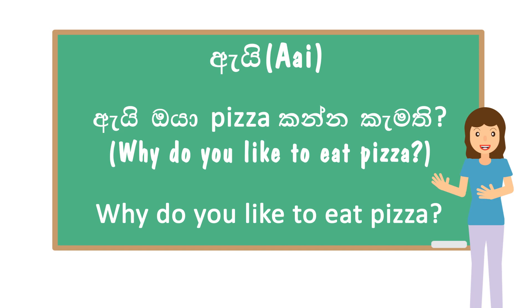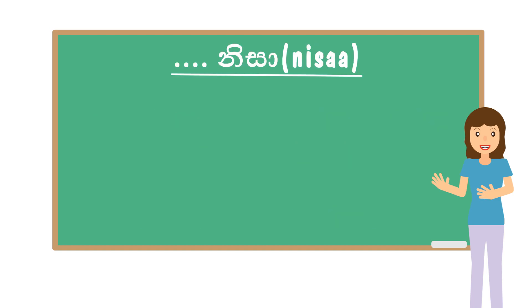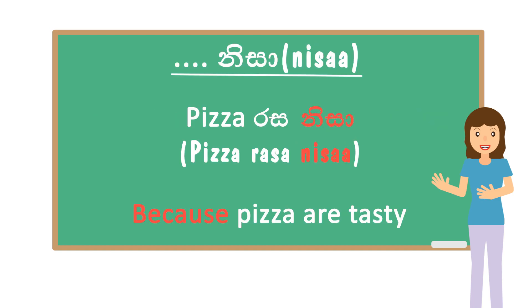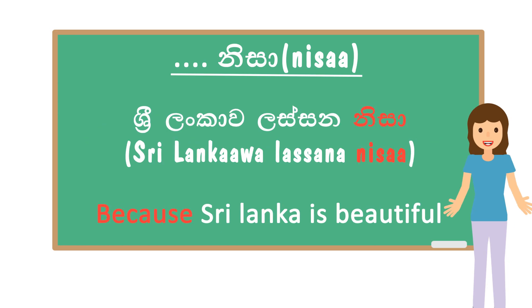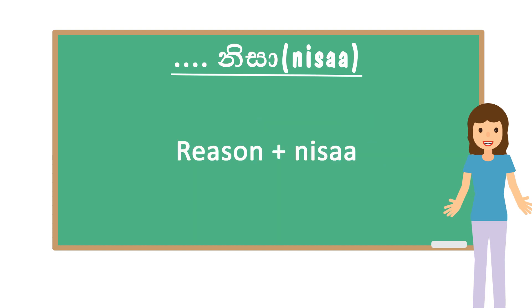'EI OYA PIZZA KANA KAMATI' means 'why do you like to eat pizza?' You can answer this question like this: 'PIZZA RASA NISA.' We use the word NISA at the end of the sentence. Another example: 'EI OYA SRI LANKAVATA KAMATI' means 'why do you like Sri Lanka?' The answer can be 'SRI LANKAVALASANA NISA,' meaning 'because Sri Lanka is beautiful.' Say the reason, then say NISA at the end.